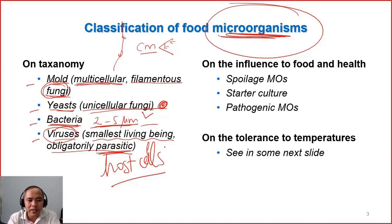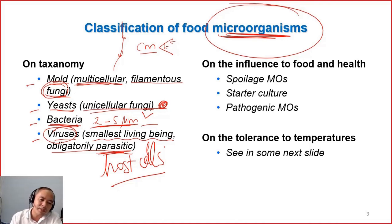They contaminate into bacteria, into plant cells, into animal cells — then they will multiply and they cause issues sometimes. For example, nowadays we talk a lot about coronavirus. They can go into our body, multiply in number, and cause issues to our health.